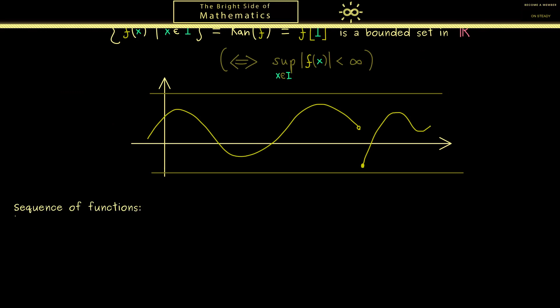However, now I want to combine both concepts. We call this a sequence of functions, and indeed it's very abstract but not so complicated at all. Just imagine that we have a lot of graphs where we go through them in discrete time steps. So there we have our first graph, and then comes the next one, and then the third one somewhere, and this just continues because we have infinitely many of them.